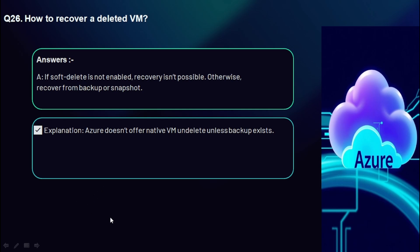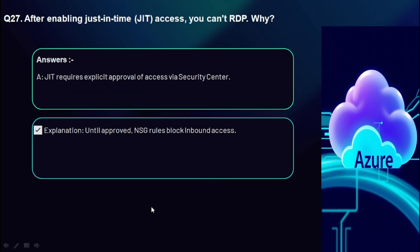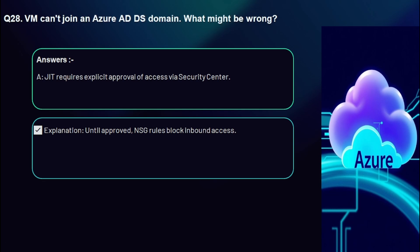Question 27: After enabling Just-in-Time (JIT) access, you can't RDP — why? JIT requires explicit approval of access via Security Center. Until the request is approved, NSG rules block inbound access.